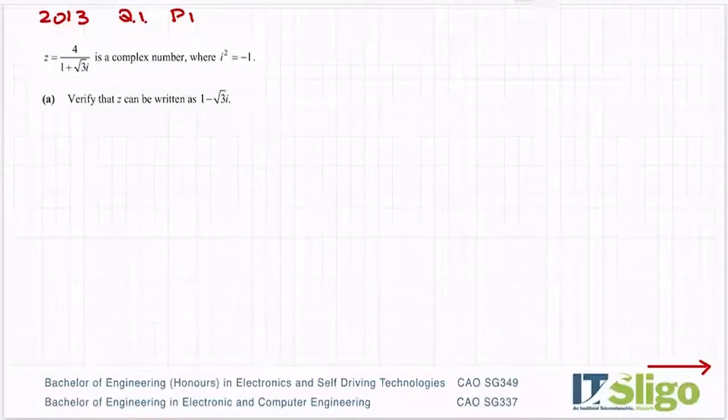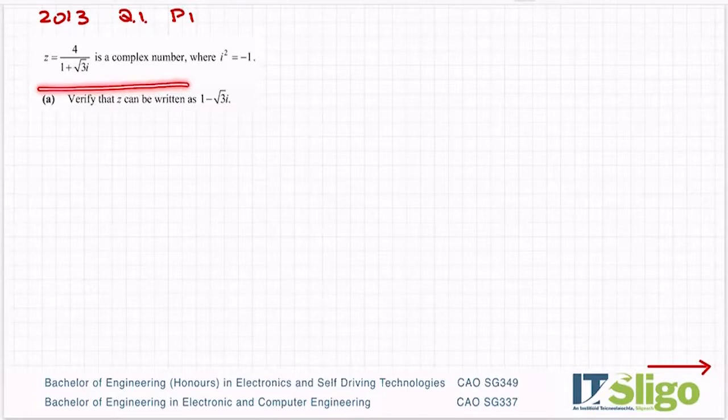2013 complex number question. z equals 4 over 1 plus root 3i is a complex number where i squared equals minus 1. Part A: verify that z can be written as 1 minus root 3i.